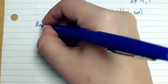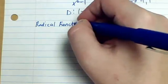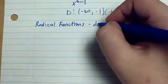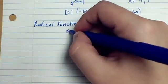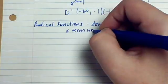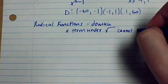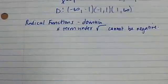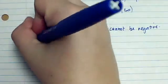Alright, the next thing is radical functions, which are the same thing as square roots. So for the domain, in this case, the term underneath the radical cannot be negative. Because then it would be undefined and not workable.